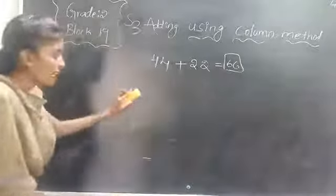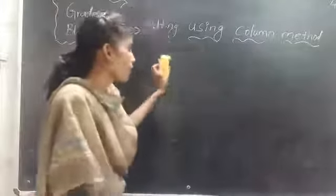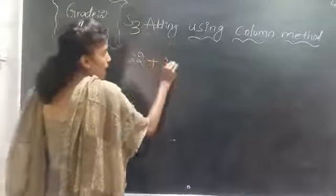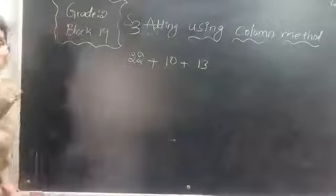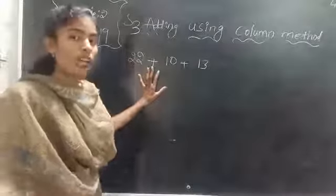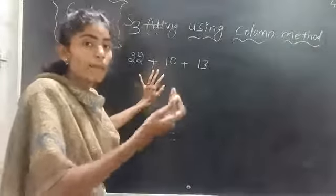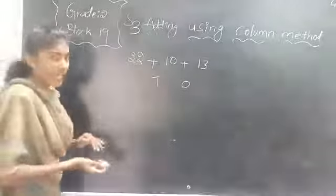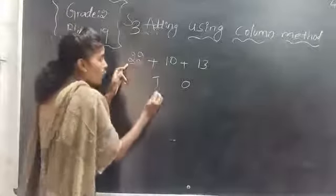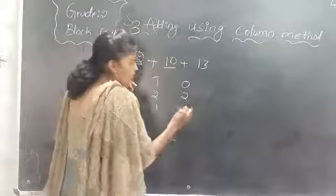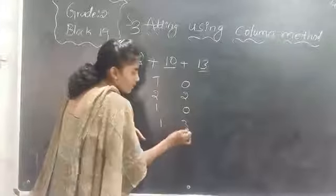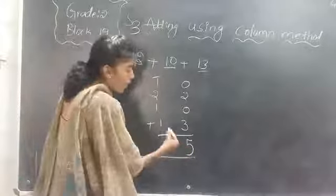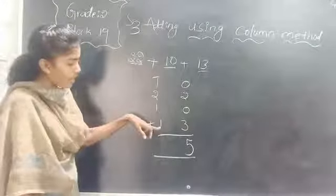Now what if you have 3 two-digit numbers — how will you add? We have 22 plus 10 plus 13. We use the same column method. Write the 1s and 10s place values. 22 has 2 tens and 2 ones. 10 has 1 ten and 0 ones. 13 has 1 ten and 3 ones. Now add: 2 plus 0 is 2, plus 3 is 5 — so 5 in the 1s place. And 2 plus 1 is 3, plus 1 is 4 — so 4 in the 10s place. The answer is 45.